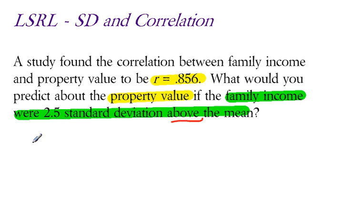all you really have to do is take your correlation 0.856 and multiply that times the number of standard deviations away from the mean that you're concerned with for the first variable. What would you predict about the property value if the family income were 2.5 standard deviations above the mean?